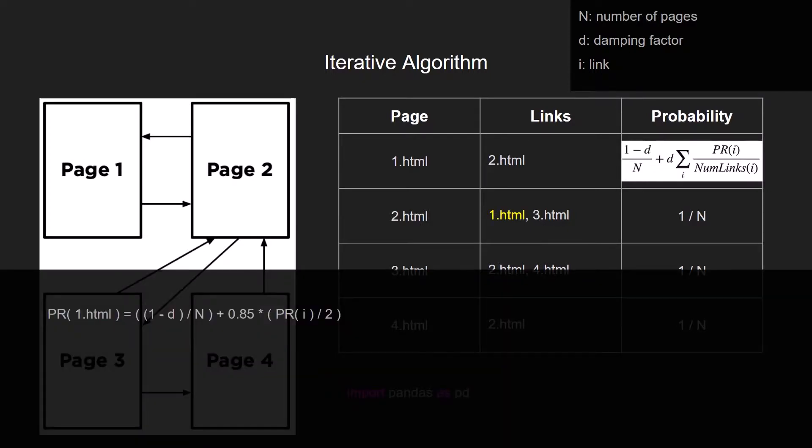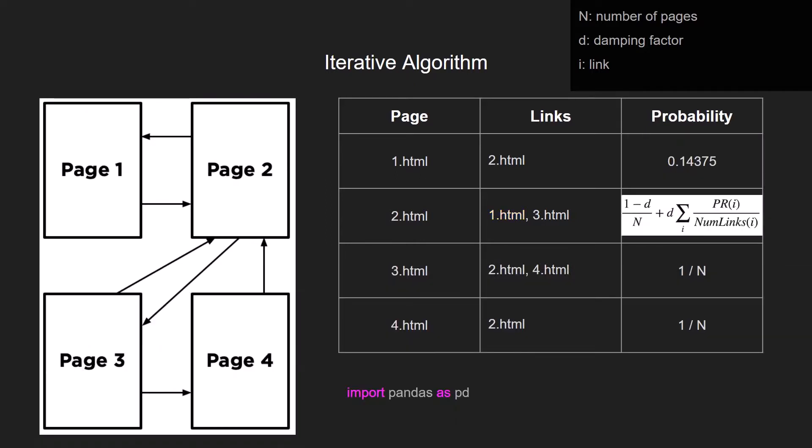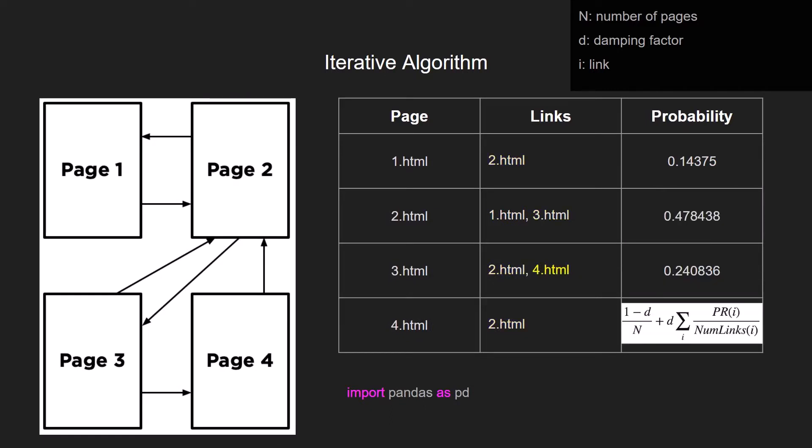So we can use the formula. And we increase the probability of being in that page by the summation of the probabilities of the page that links to it. So we have the probability and we can replace the values and calculate the value again. So we do this process again and again.